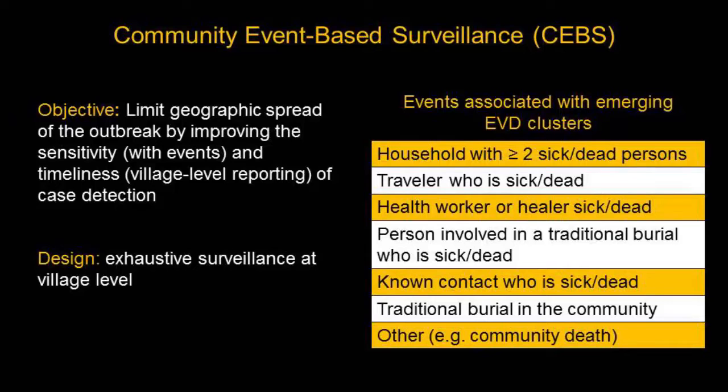In response to these challenges, we designed a program called Community Event-Based Surveillance, with the objective of limiting geographic spread of the outbreak by improving the sensitivity and timeliness of case detection. The system essentially sacrificed specificity in order to gain speed in detecting cases more quickly. We did this by training a network of community health monitors at the village level to detect and report on a standardized list of events associated with Ebola transmission. We chose an event-based system rather than a case-based system because it would be quicker and easier for community health monitors to apply and interpret.